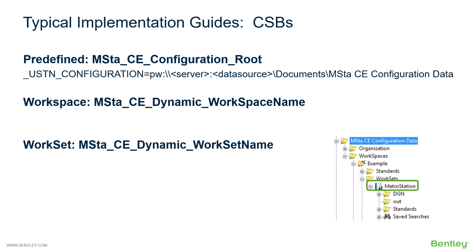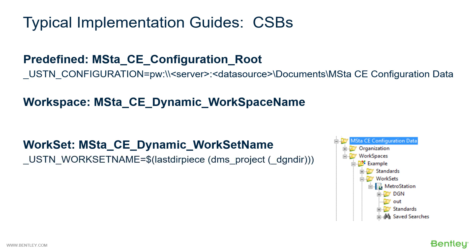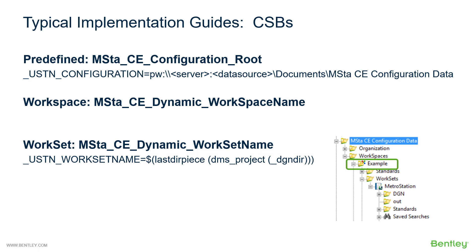Let's look at the workset first. We can tell by the icon that the workset folder has been upgraded to a ProjectWise project work area. As this is the case, one of the special ProjectWise variable operators can be used to find this folder and get the name. This operator is the DMSProject variable operator. USTN_WorksetName can use DMSProject to find the folder and combine this with the lastdir piece to get the name of the folder and thus assign that to WorksetName.